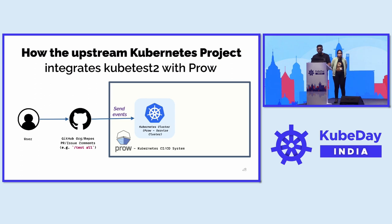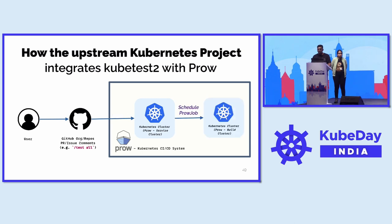Prow is listening, takes the event, sends it to the Prow service cluster, and then creates a Prow job that's scheduled on a Prow build cluster. Let's take a look at what's happening in the build cluster.